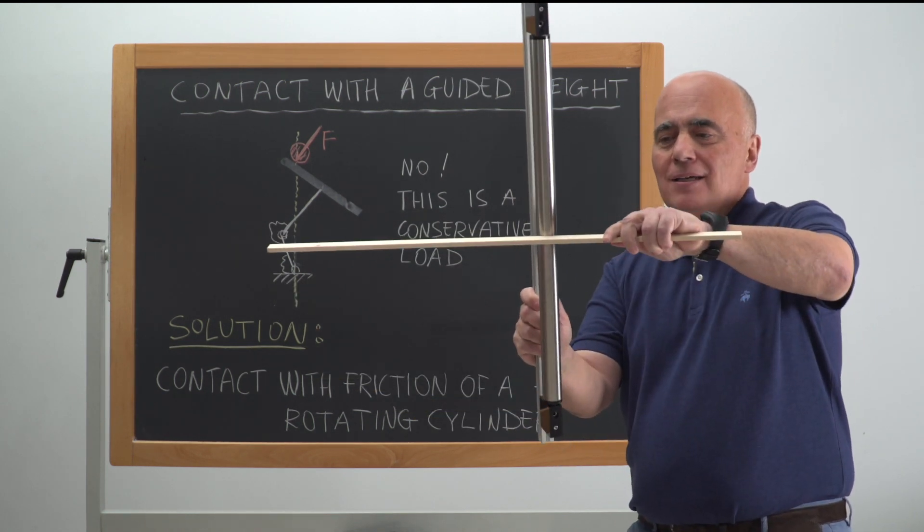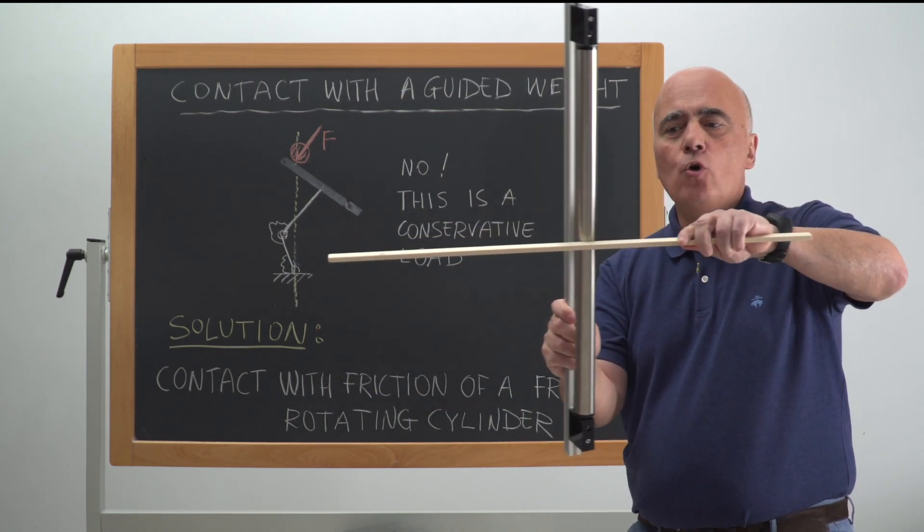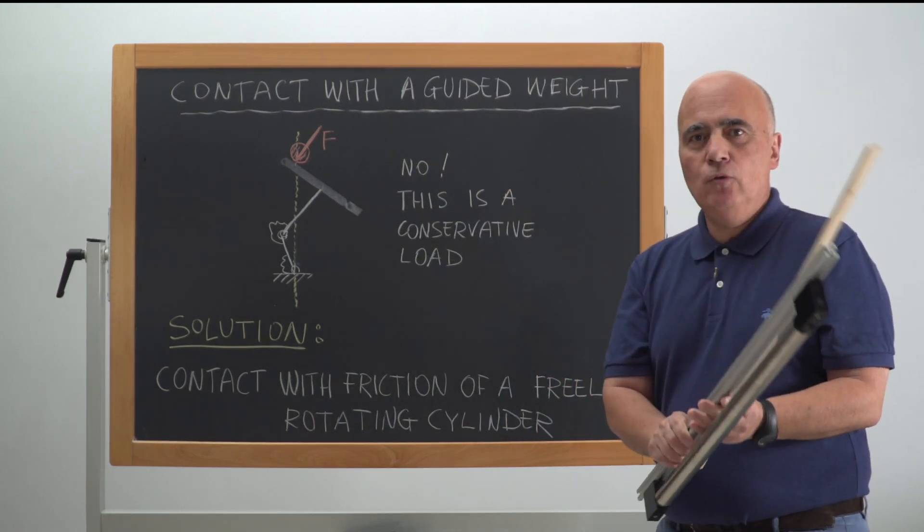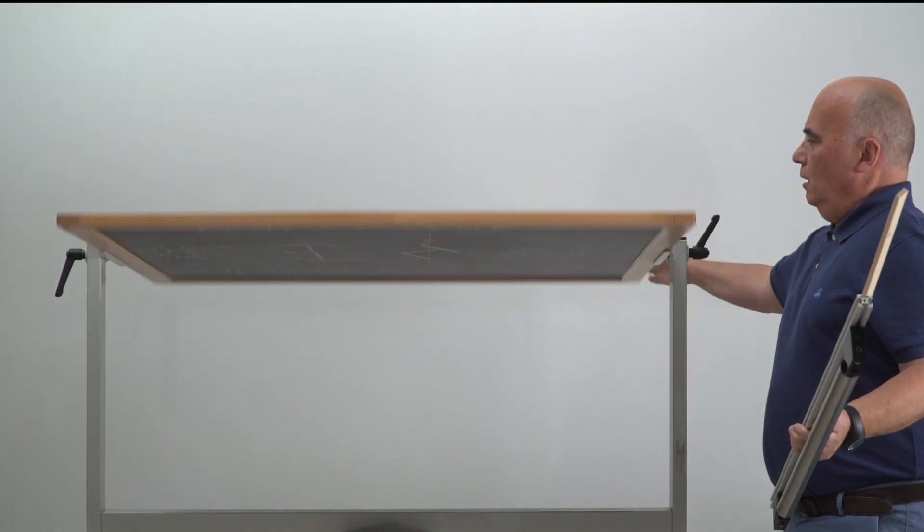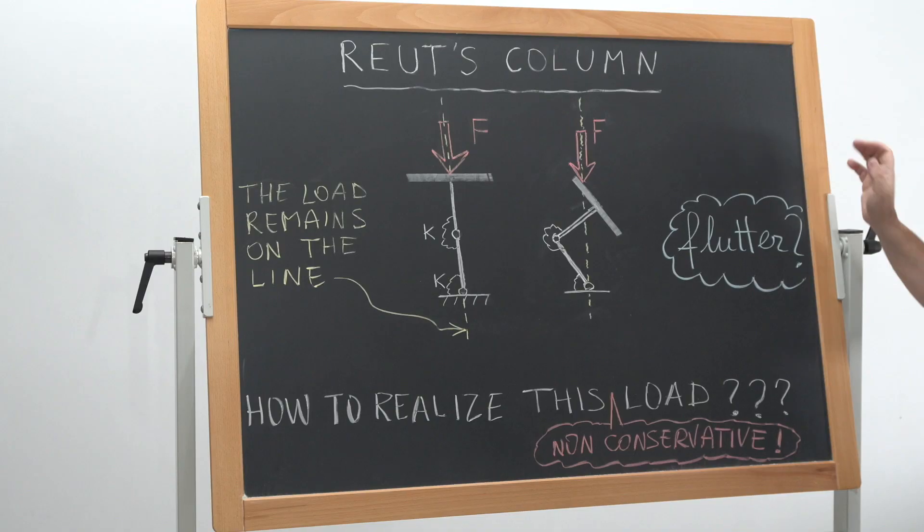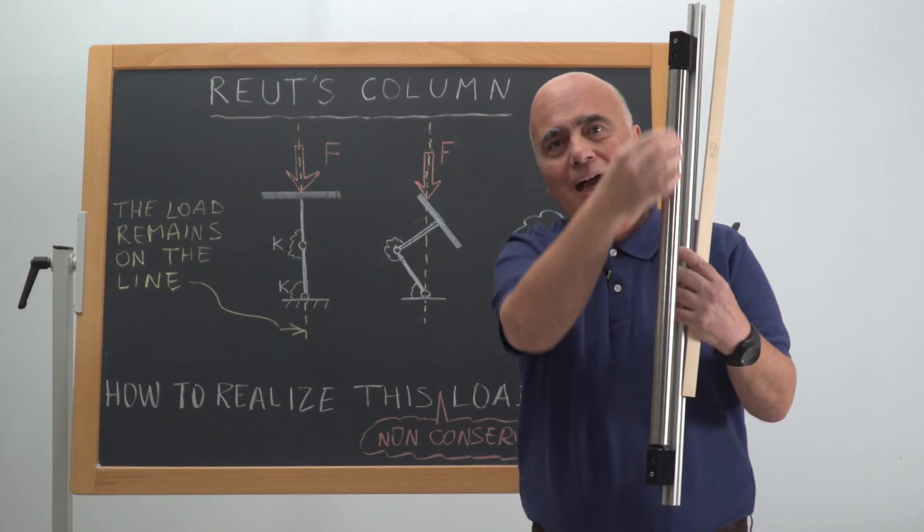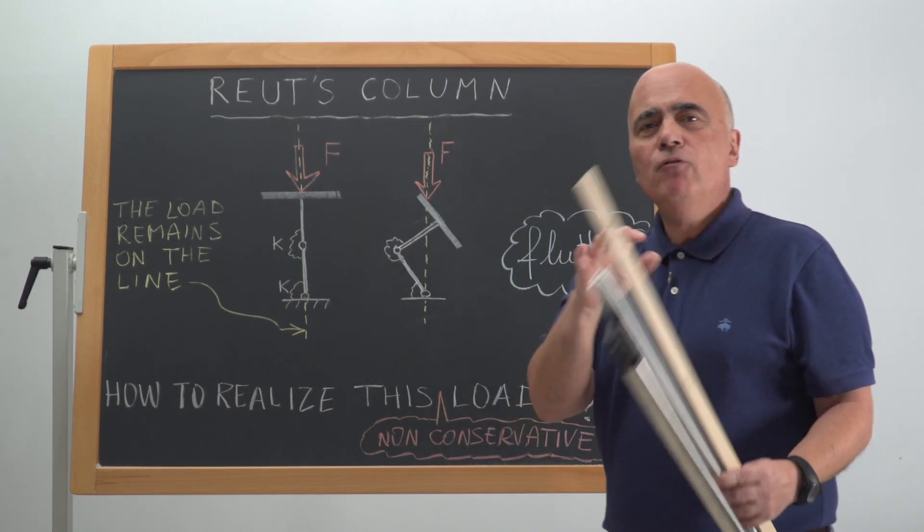Otherwise, the cylinder would simply rotate without transmitting any force. Now, this is the way to realize the Reut's force that is sketched here and remains on this line. This line becomes the axis of the cylinder. Now this is the idea.